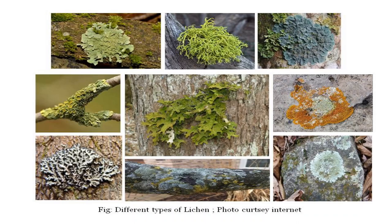In the heteromerous type, the thallus is differentiated into four distinct layers: upper cortex, algal zone (gonidial layer), medulla, and lower cortex — showing a tissue-differentiation type of organization. This concludes this brief introductory lecture on the basic concepts of lichen. Thank you for watching.